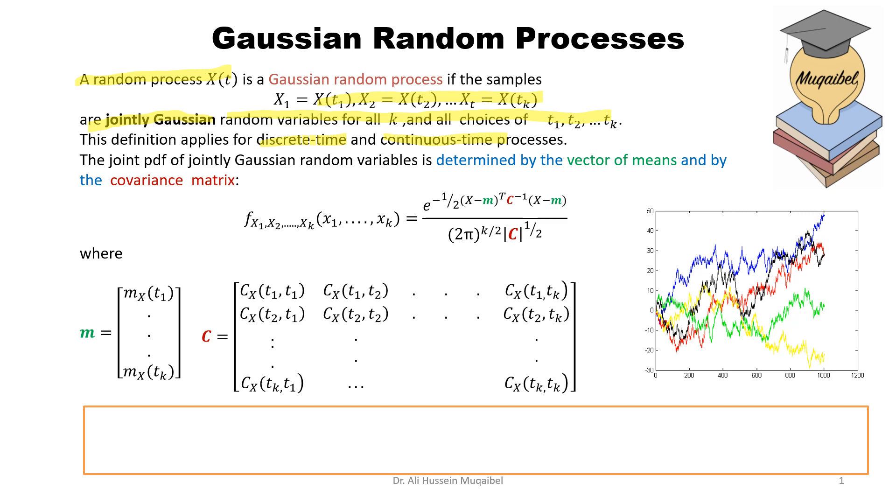The joint PDF, or the joint Gaussian random variable, is determined by two things: the vector of means we're showing here in green, and the covariance matrix which is shown in red here. So if the following equation applies to the joint PDF, we have a Gaussian random process.